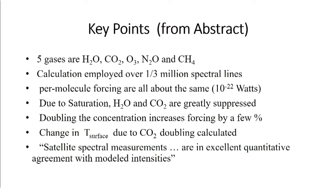They calculated the surface temperature effect due to doubling of CO2, which goes under the name of climate sensitivity. Doubling the concentration increases the forcing by a few percent — that's the kind of number like 3.7 watts per square meter. That's what doubling actually does. The calculation by Van Wijngaarden and Happer really did show that. The final line of that abstract was that satellite spectral measurements at various latitudes are in excellent quantitative agreement with modeled intensities. That is one whopping big important statement about science.